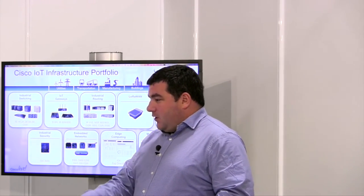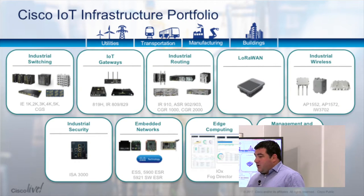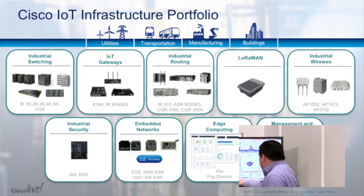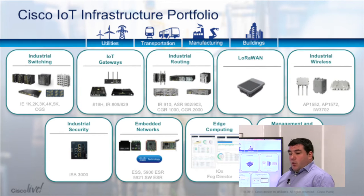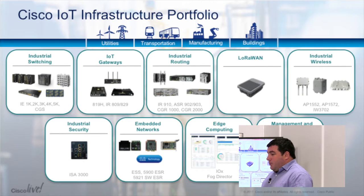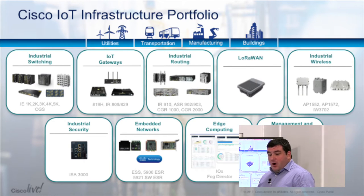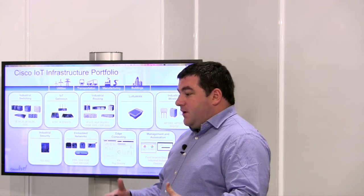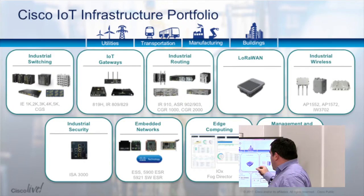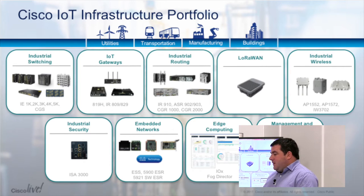In industrial wireless we have extremely ruggedized access points deployed in hazardous locations like oil and gas environments, and access points deployed in rail for transportation — on the train itself. We just released an industrial firewall last year: a ruggedized firewall with all the functionality you find on the regular ASA portfolio at Cisco, plus functionality for the OT and manufacturing space. For example, in this firewall you can do deep packet inspection of SCADA, PROFINET traffic, and similar protocols. And yes — it is Firepower-based.